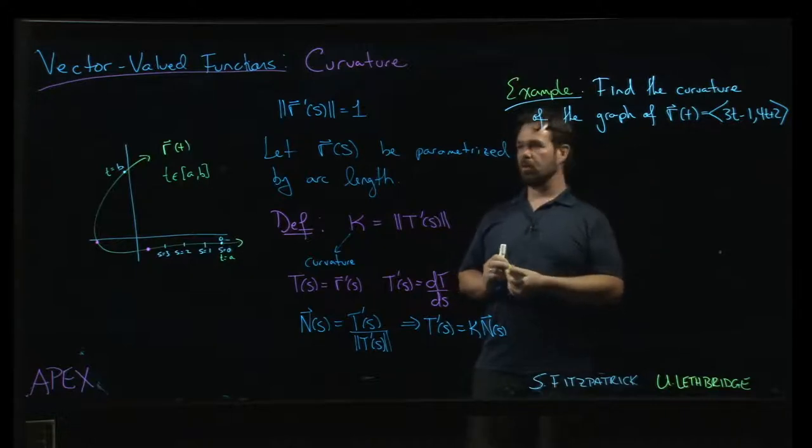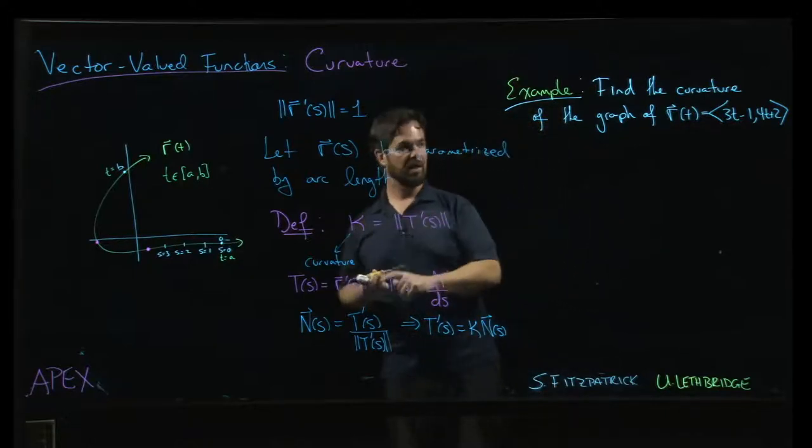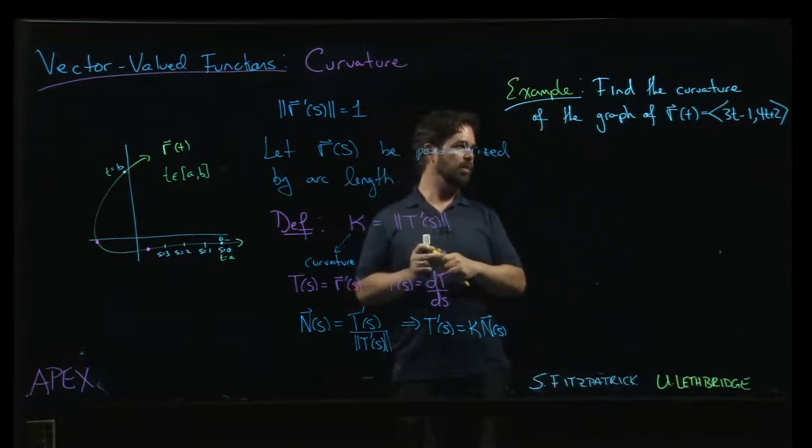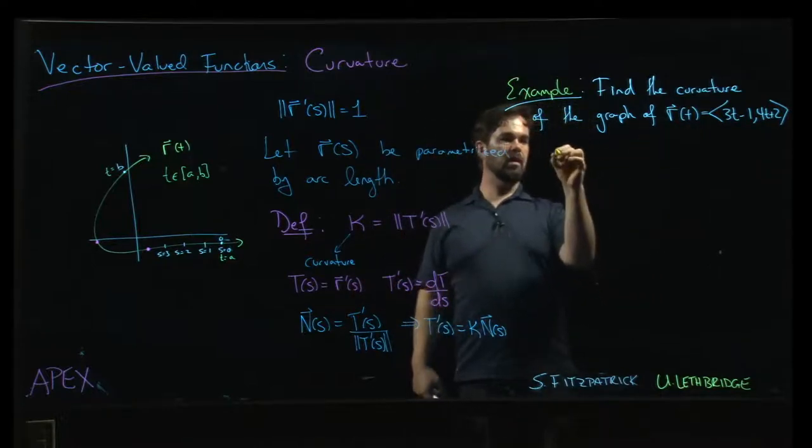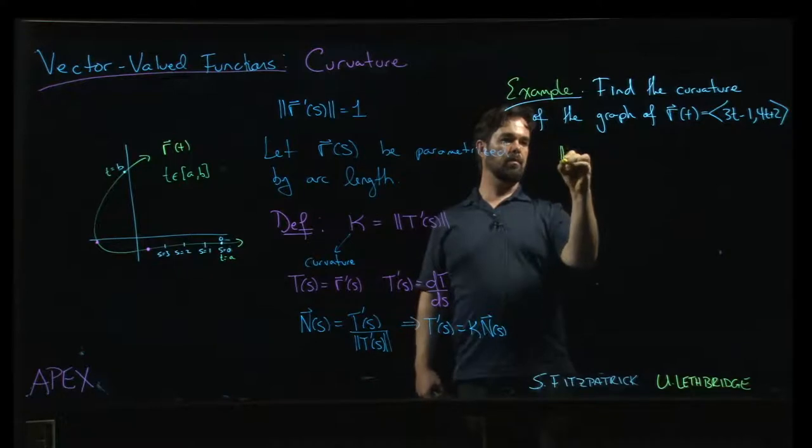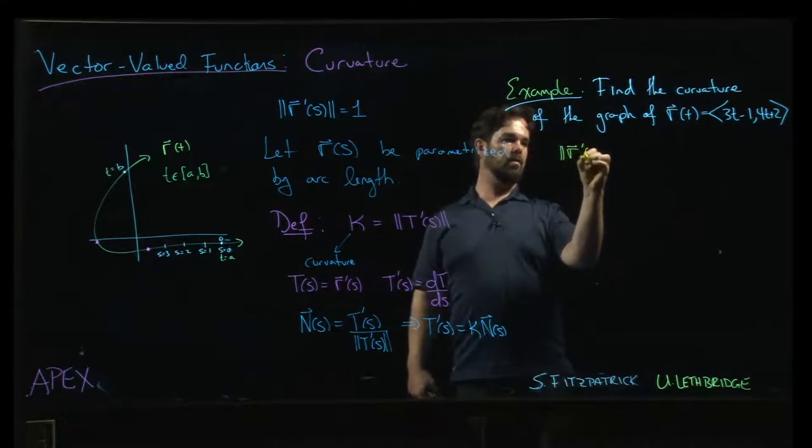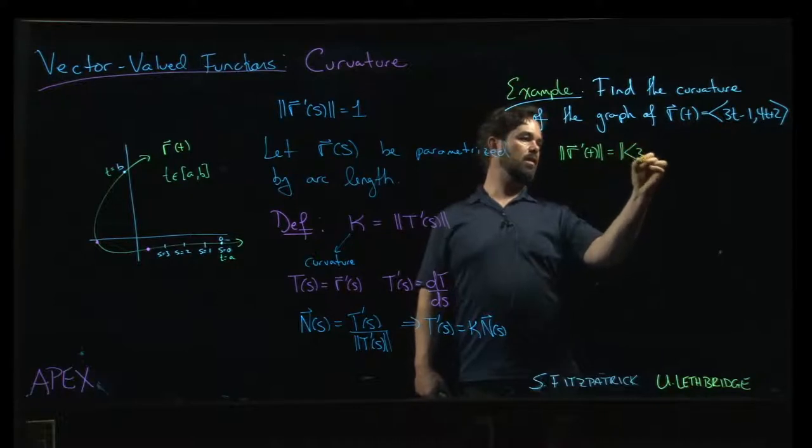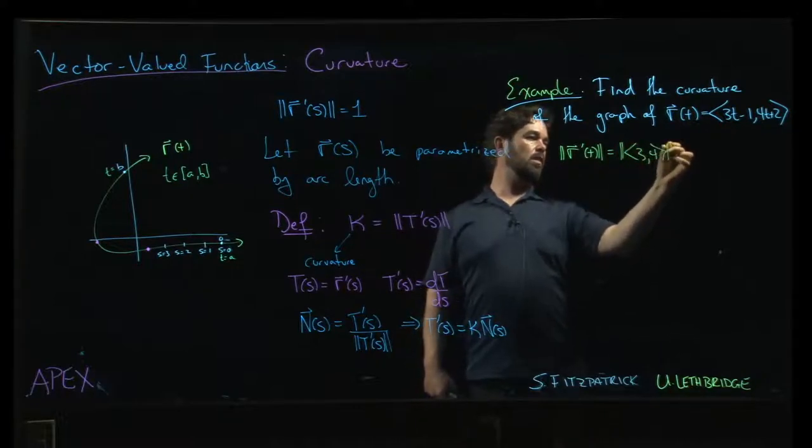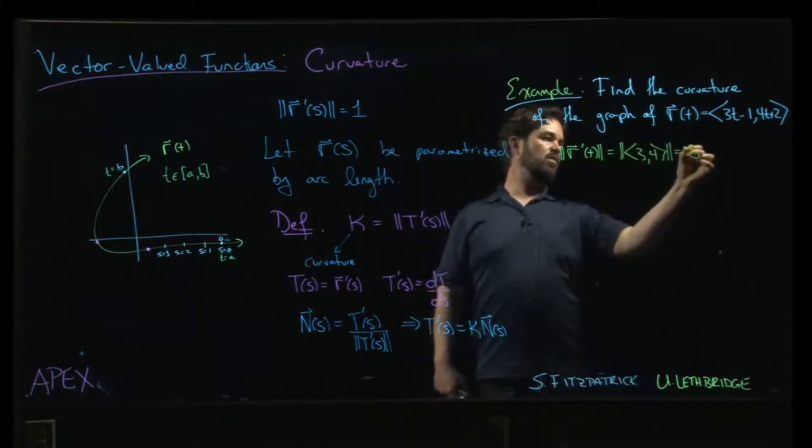We looked at this example earlier when we were introducing the arc length parameter, and we said this is not parametrized by arc length, because if you calculate the magnitude of r prime, you're looking at the magnitude of the vector (3, 4), which is 5.